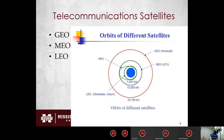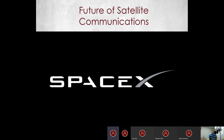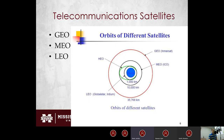You'll likely see one or two exam questions on satellite orbits. Key takeaway: geostationary has the highest latency but needs the fewest satellites for full coverage. Highly elliptical orbit (HEO) follows an elliptical path, varying in altitude — sometimes close to Earth, sometimes far — operating somewhere between MEO and LEO in terms of latency.